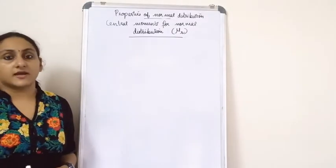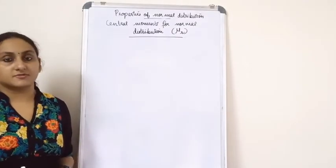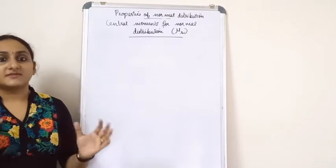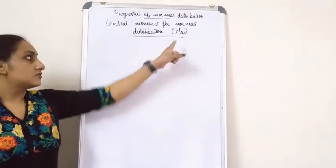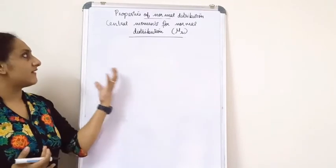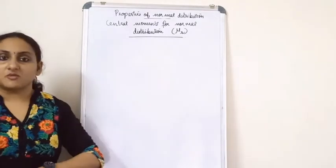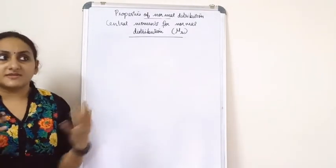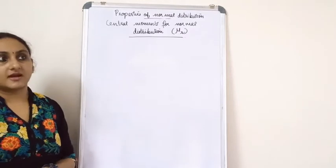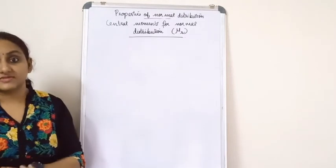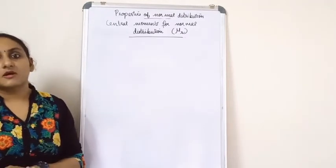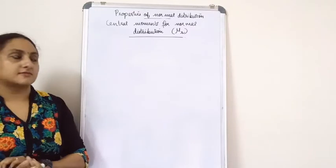Now let's look at the central moments for a normal distribution. The central moment is denoted as mu_r. We find central moments because it is much easier to find variance and other moments for further calculations or analysis.